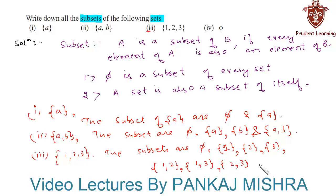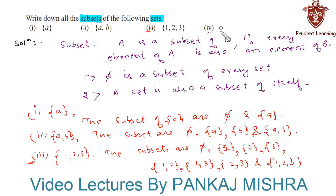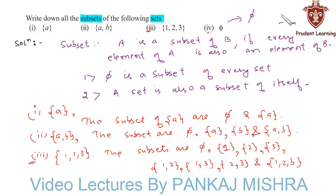And the set itself. So there are eight subsets of the given set. In the last section, we have an empty set. We know that the subset of an empty set is the empty set itself, so we have only one subset, and that is the empty set. This completes our solution.